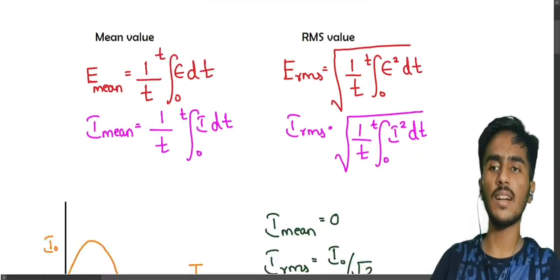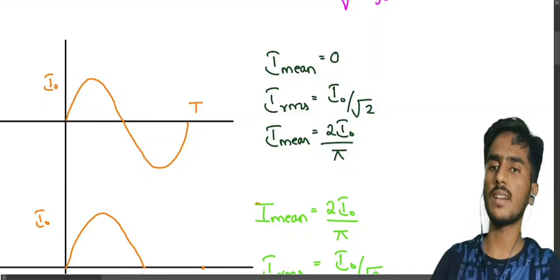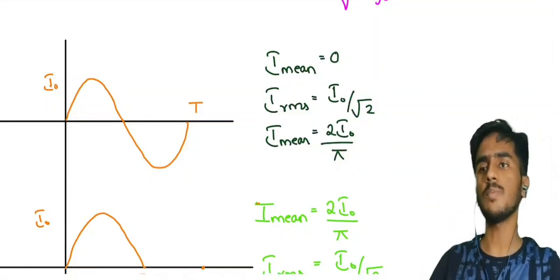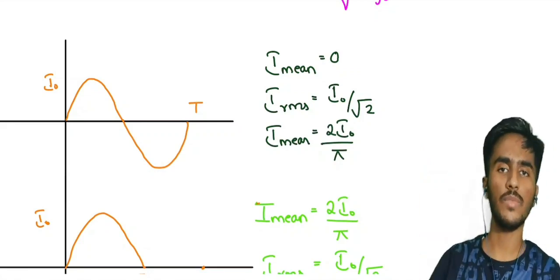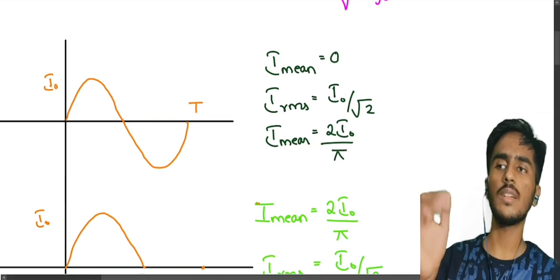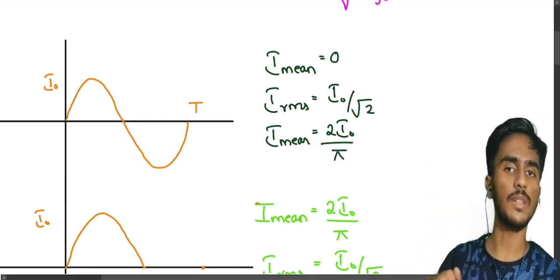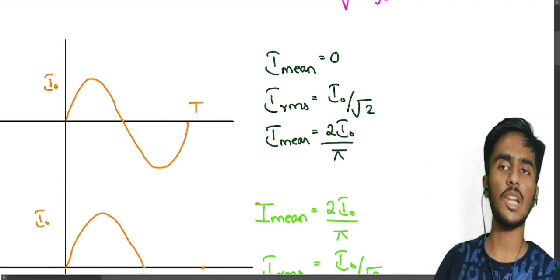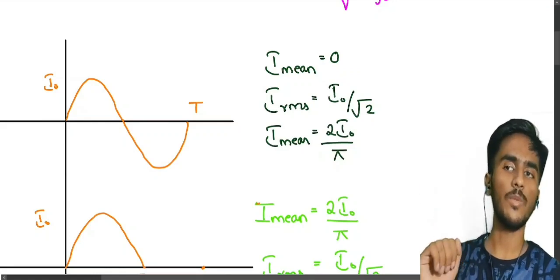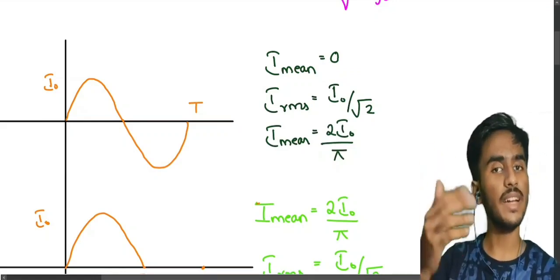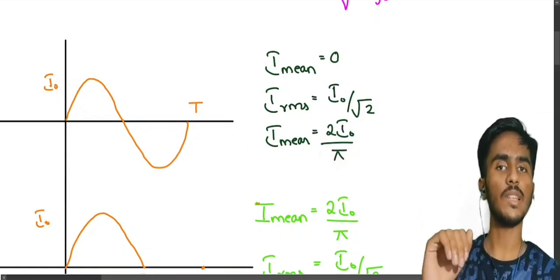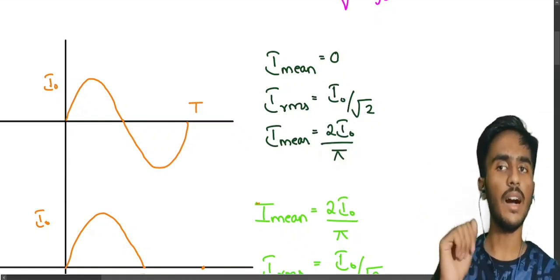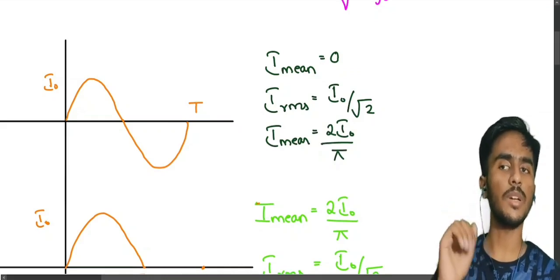We can now see standard results. First, consider a sine wave graph. In this case, for a full cycle (0 to T), the mean value is 0, because there is a positive half-cycle and a negative half-cycle that cancel each other. The RMS value is I0 divided by root 2.